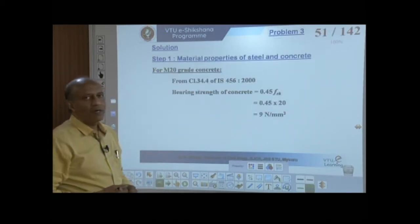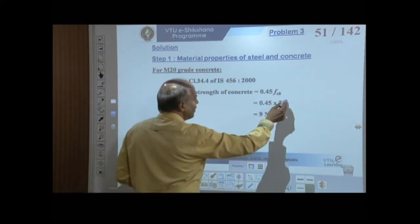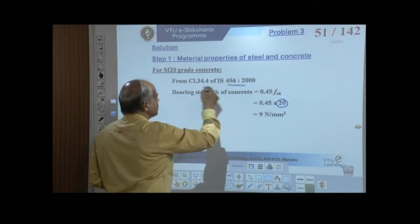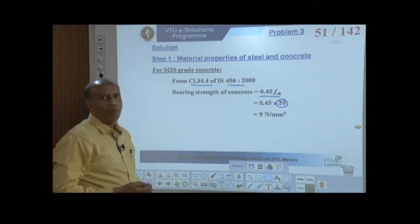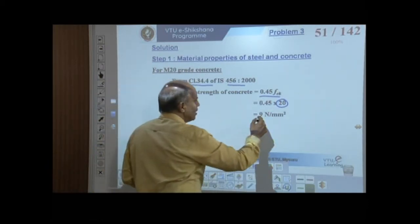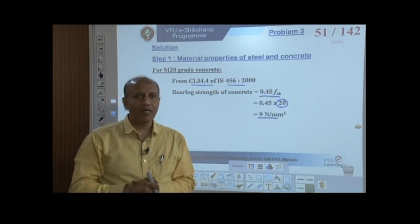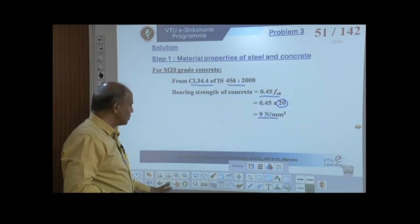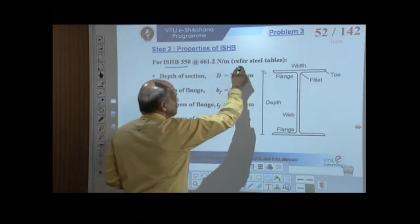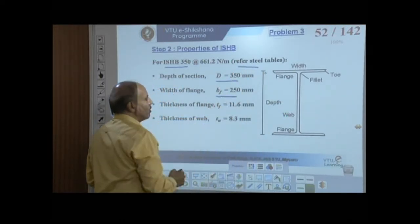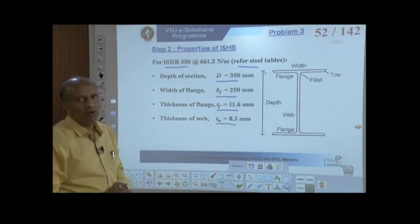The bearing strength of concrete: for M20 grade, as per IS456 Clause 34.4, the maximum bearing strength is 0.45×fck = 9 MPa. The stress on concrete should not exceed 9 MPa. Properties of section ISHB 350 — depth, flange width, flange thickness, and web thickness — are obtained from steel tables.